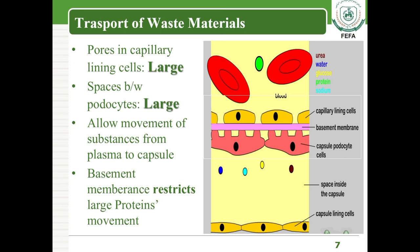Due to the pressure gradient created by the afferent and efferent arterioles, various materials — such as urea, water, sodium, and other toxic waste materials — move from the blood capillaries into the Bowman's capsule. The capillary lining and podocytes have large pores to allow this movement. However, the basement membrane of the capillaries restricts the movement of proteins, so proteins are prevented from entering the Bowman's capsule.